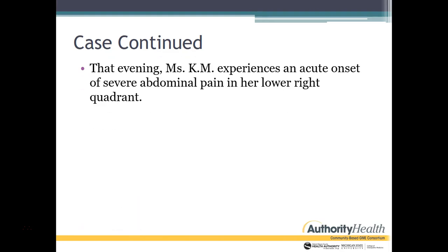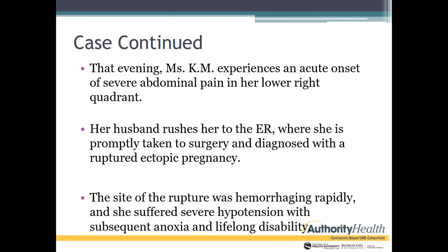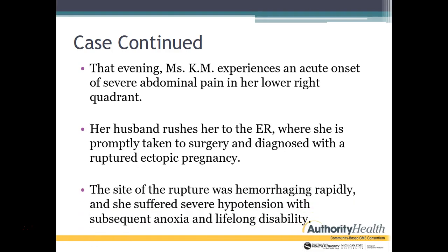So what happens? That evening, she experiences an acute onset of severe abdominal pain in her right lower quadrant. She goes to the ER, is promptly taken to surgery, and diagnosed with a ruptured ectopic pregnancy. The site of the rupture was hemorrhaging rapidly and she suffered severe hypotension with subsequent anoxia and lifelong disability. This is an example of a patient safety case that can occur in the outpatient setting.